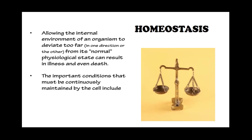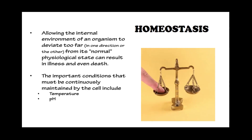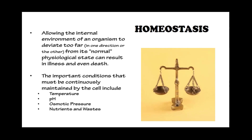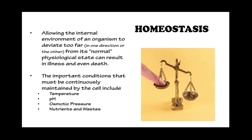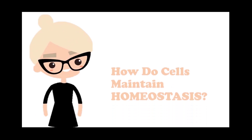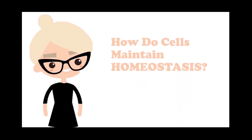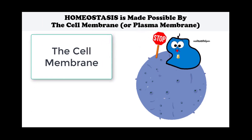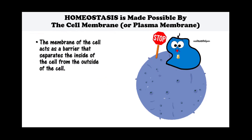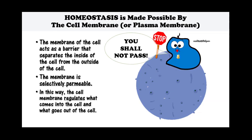The important conditions that must be continuously maintained by the cell include temperature, pH, osmotic pressure, available nutrients, and making sure there are not too many waste products built up in the cell. Homeostasis is made possible by the cell membrane or plasma membrane. The membrane acts as a barrier separating the inside from the outside of the cell, and the membrane is selectively permeable, regulating what comes into and goes out of the cell.